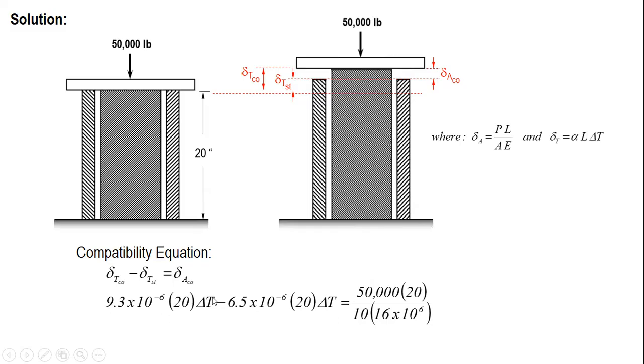And then compute. This can be combined. We can extract delta T, and then subtract this value by this one, and then divide the result on the right side. And the answer is 111.607 degrees Celsius. This is the final answer. That's it. Thank you for watching.